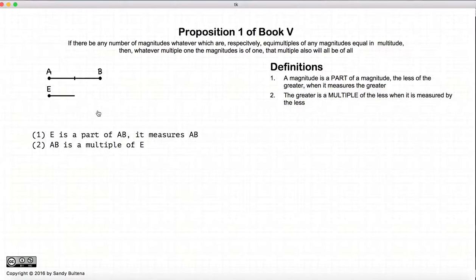So we have three words here that are going to be used by Euclid throughout this book: part, measures, and multiple. So now that we know this, let's start with this proposition.